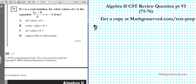Question 71: if x is a real number, for what values of x is the equation (3x minus 9) over 3 equals x minus 3 true? This is a case where you have an equation with variables on both sides. Anytime you're solving an equation with a variable on both sides, you could have no solution, one solution, or infinitely many solutions.